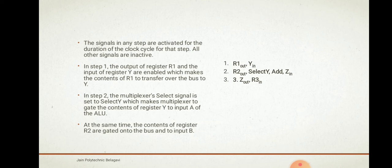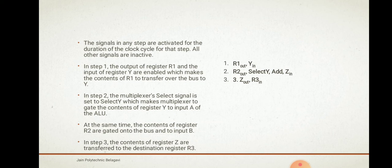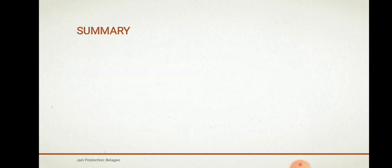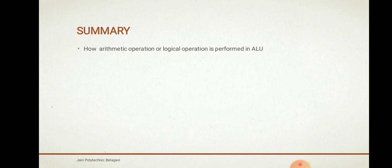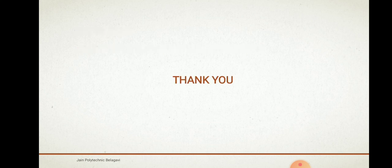In step 3, as you can see, the contents of register Z are transferred to the destination register R3. In this video we have discussed how arithmetic or logic operations are performed in the ALU. Thank you.